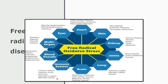Our body is made of multiple cells; cells join to form tissues, and tissues join to form organs. Due to free radical damage, various cells in our body are affected, thereby affecting the organs. This can be manifested in the heart as heart disease, fibrosis, hypertension, ischemia, and myocardial infarction.